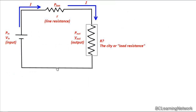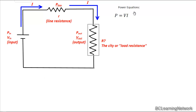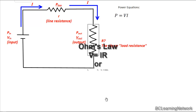Power can be solved with three different equations. Our most basic power equation is P equals voltage times current. We can get two more power equations by substituting Ohm's law, V equals IR, into this formula. Substituting IR for V gives us IR times I, or I squared R. So that's a second way we can solve for power.